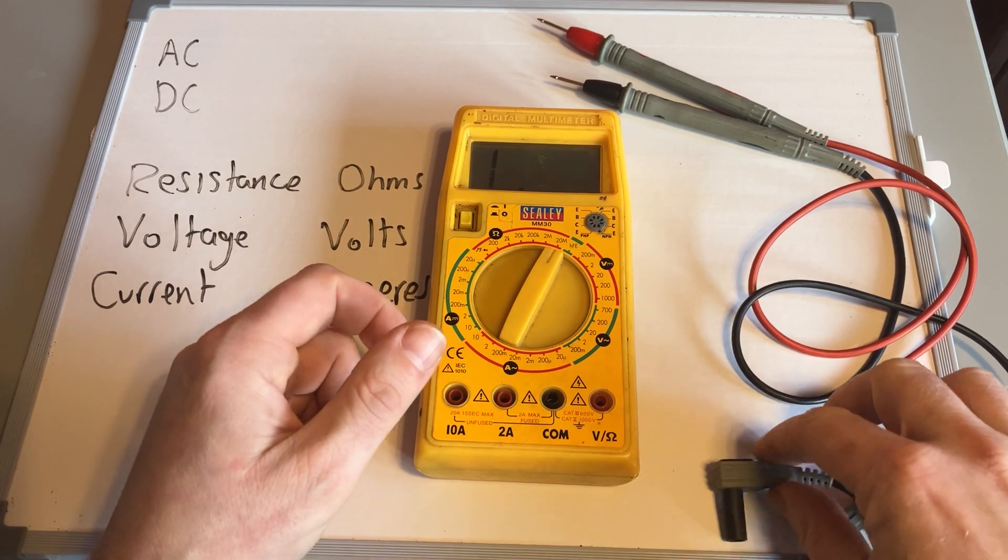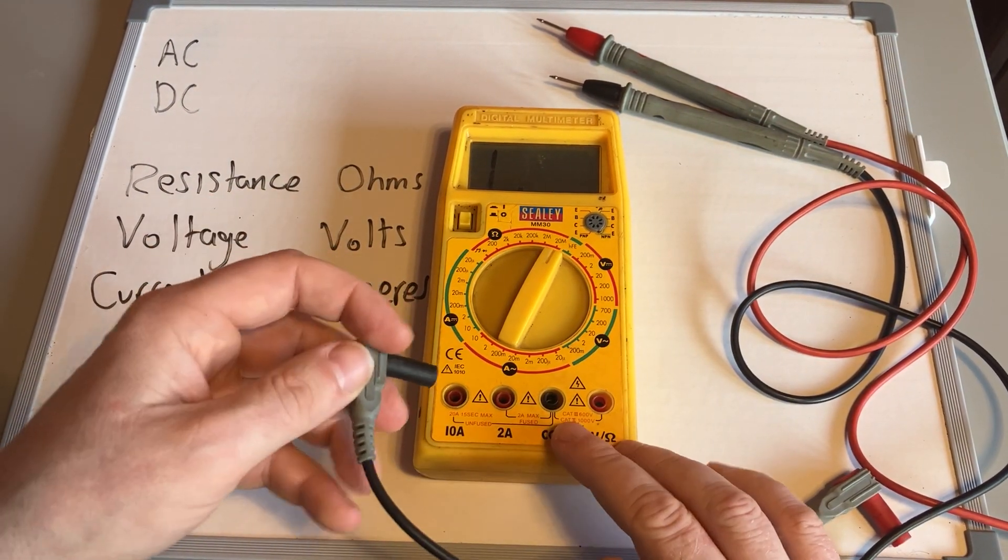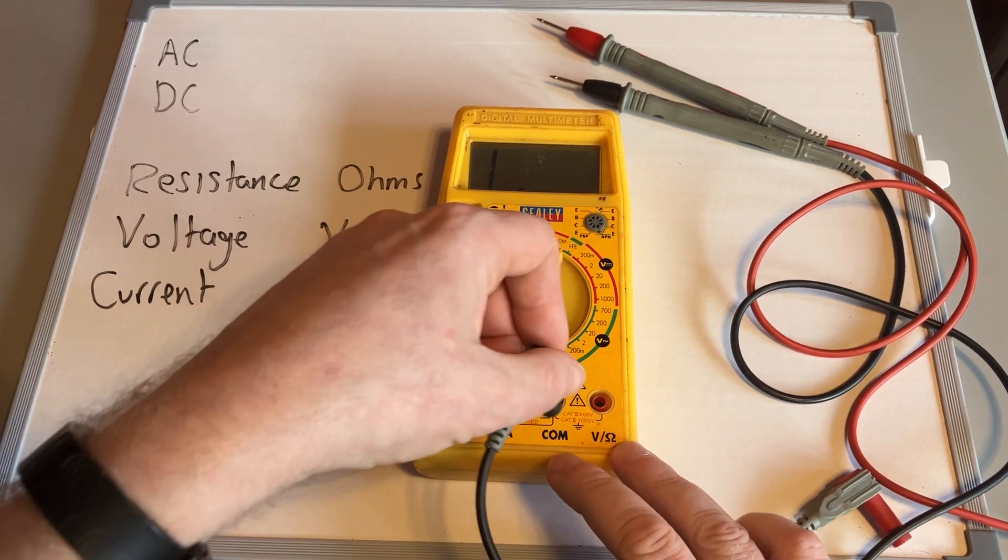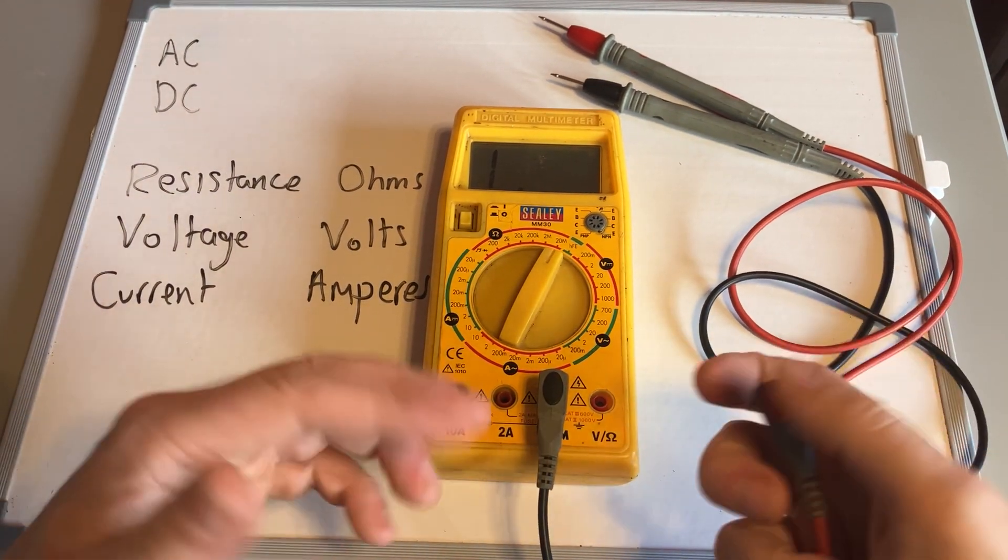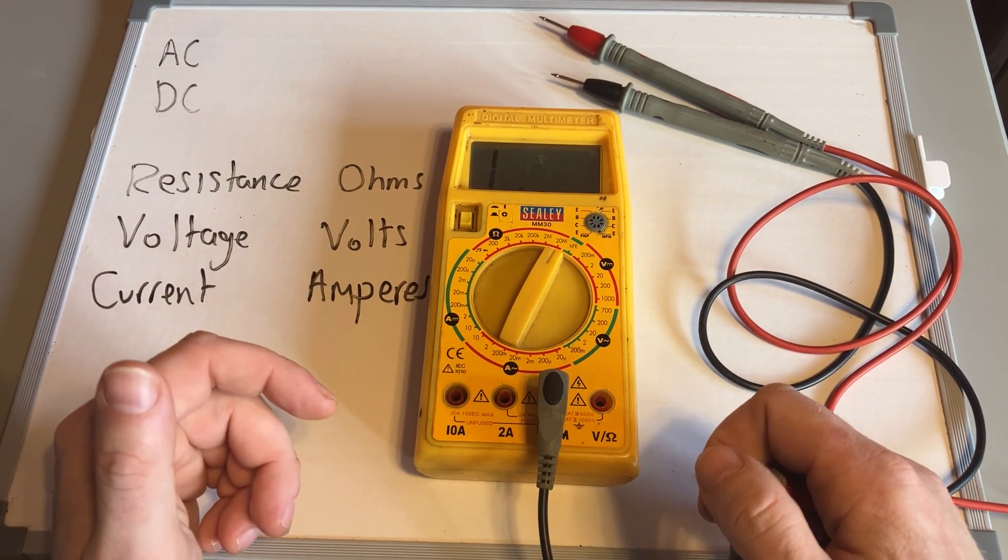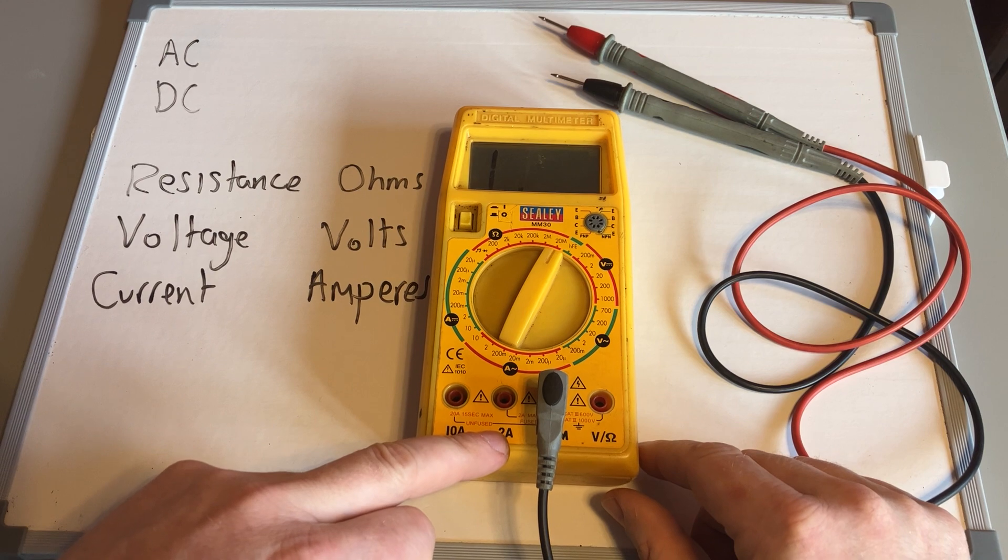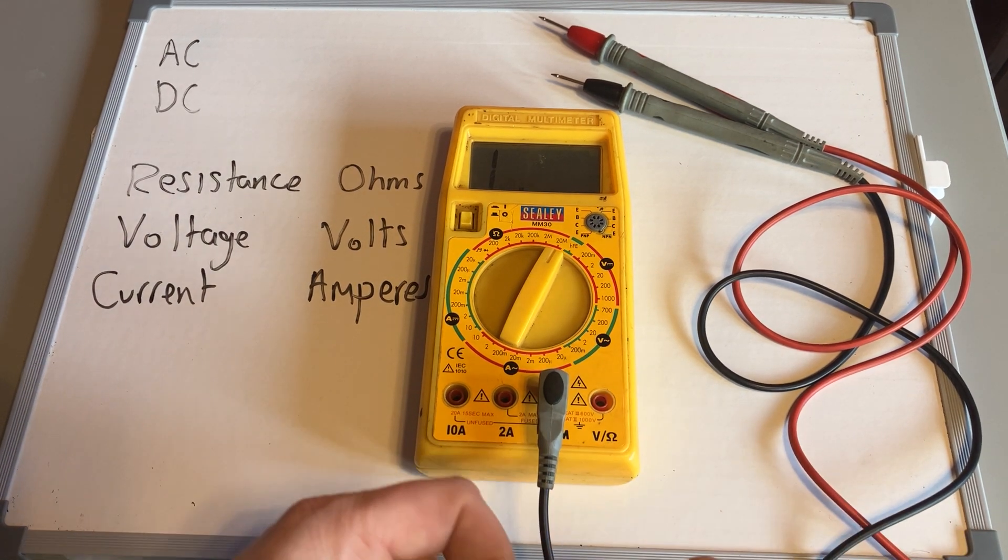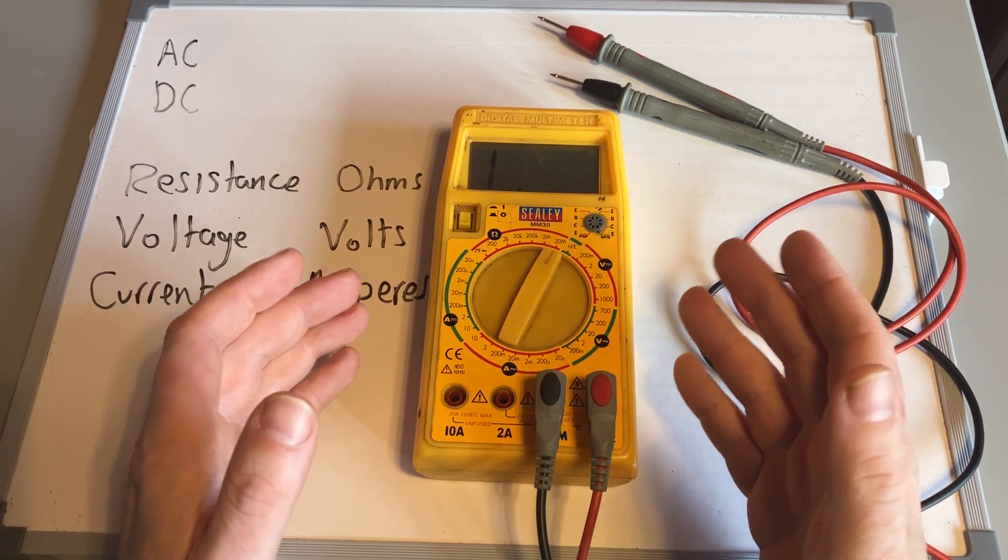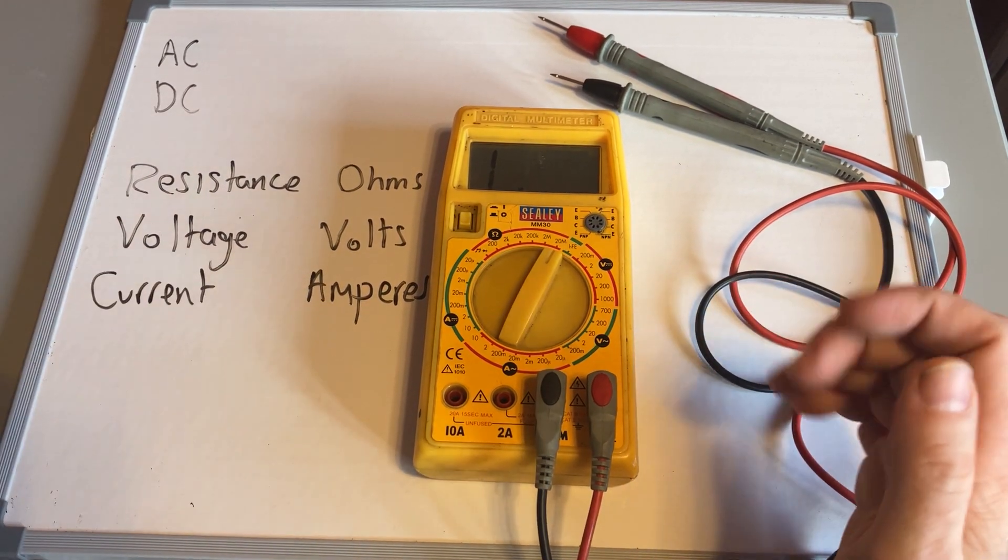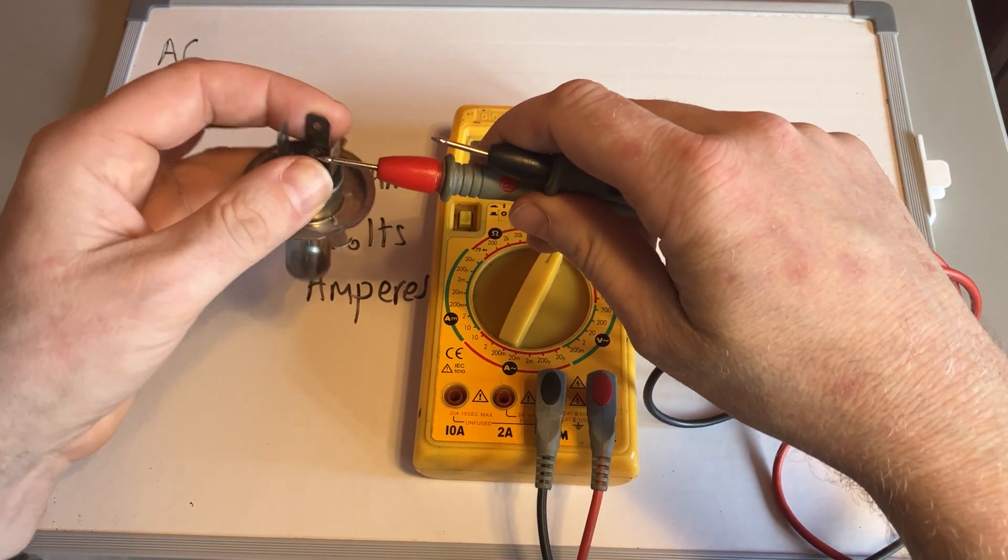For this particular test you need to get your multimeter earth lead—it's not technically an earth but it always goes black in black, so COM stands for common earth. Then you get your red lead. It doesn't matter if you put these in the wrong way around; they are just color-coded and it doesn't affect the usage of the multimeter. You've got 10 amps, 2 amps, and then volts and resistance. If I don't know what I'm expecting for resistance, what I would do is set it on the higher setting.